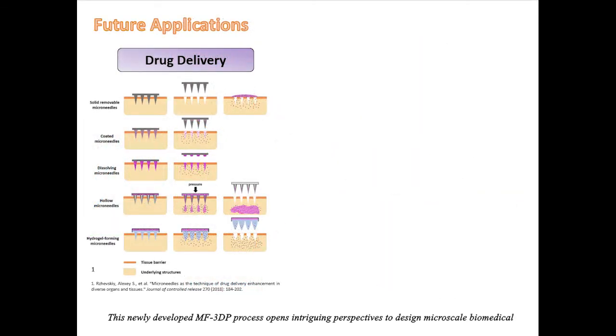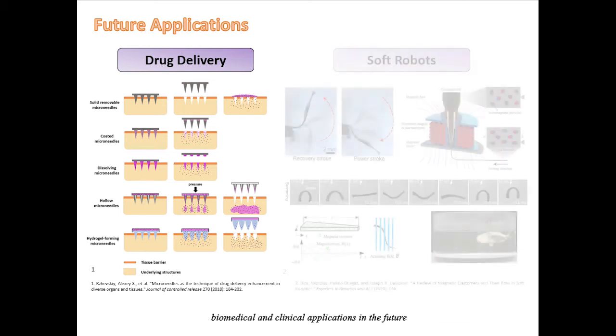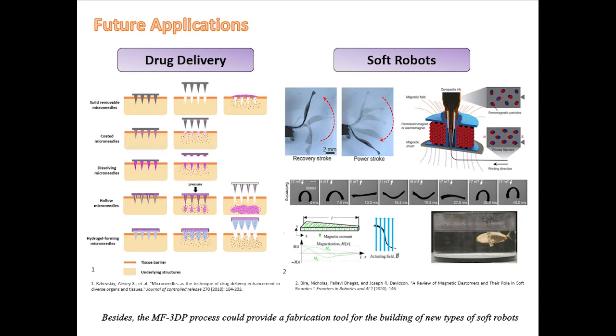This newly developed MF3DP process opens intriguing perspectives to design micro-scale biomedical devices on a basis of ultra-tiny bio-inspired features with the high mechanical performance for broad biomedical and clinical applications in the future. Besides, the MF3DP process could provide a fabrication tool for the building of new types of soft robots with anisotropic shape-changing properties.